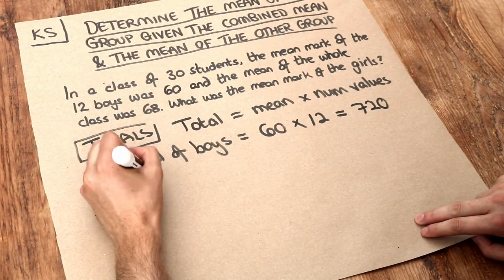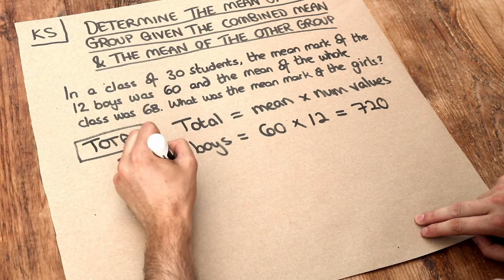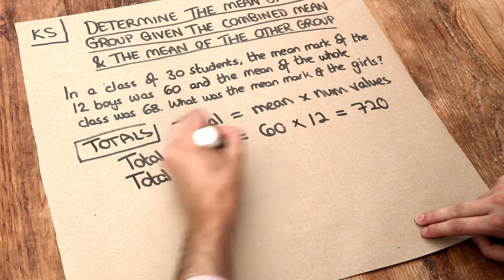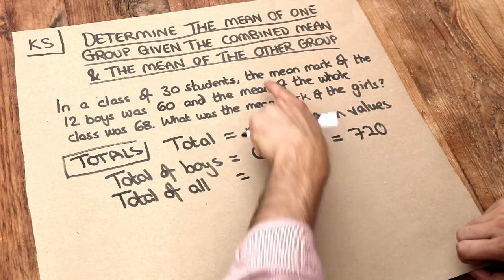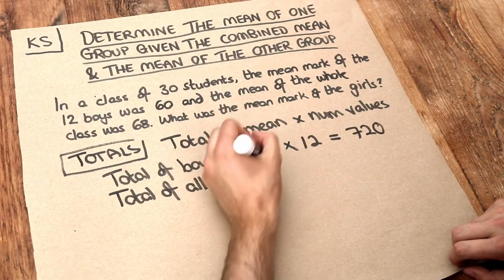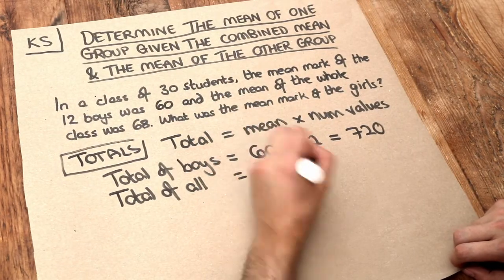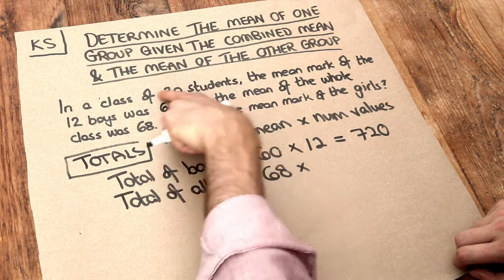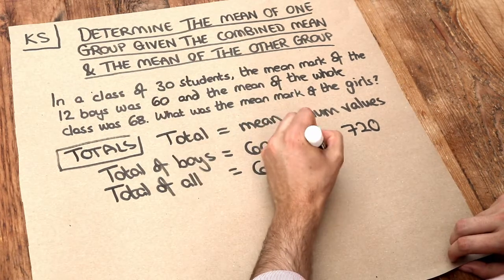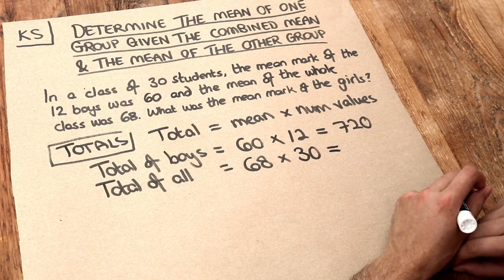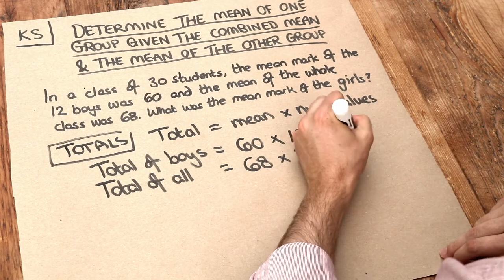Now what was the total mark of everyone? We're told the mean mark of everyone was 68, multiplied by how many students in total there were—30. So if we do 68 times 30, we get 2,040.